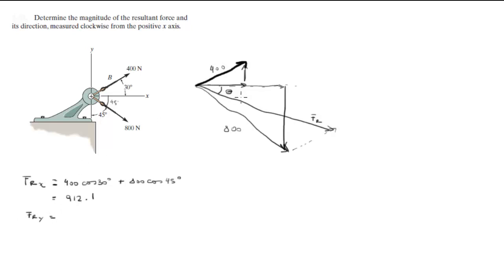Now on the y-direction, you're going to get this force minus this force because this one's going in the negative y-direction. So you do 400 sine 30 degrees minus—you got to be smart with the signs, pay attention—800 sine 45 degrees. When you subtract these two, you get negative 365.69.